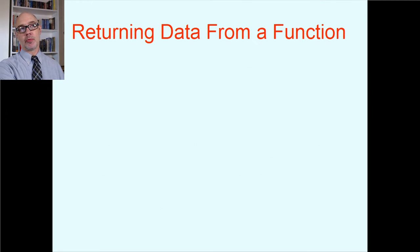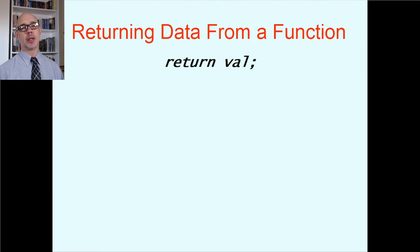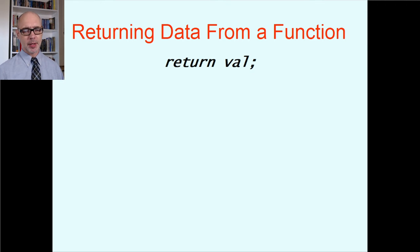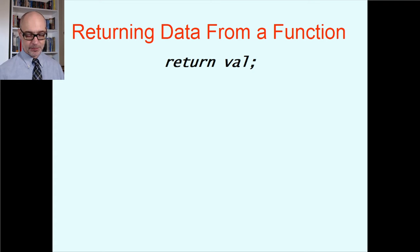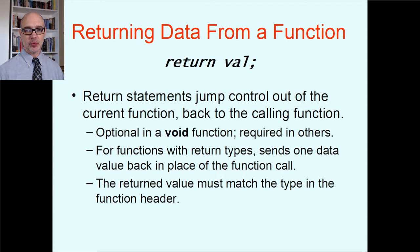Now for sending information back out — returning data. There's a keyword return in C++. For a void function you can say return by itself; otherwise you say return followed by a value — a number, a variable, or a whole expression. The return statement jumps you out of the function back to whoever called you, returning control to the calling context.